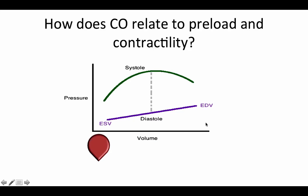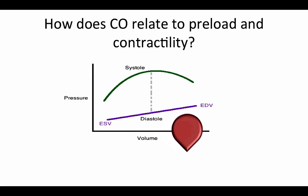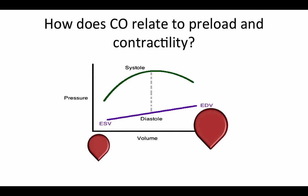The first thing you want to understand is how preload and contractility relate to cardiac output. Here we have a graph comparing what happens during diastole, which is this line shown in purple, versus systole, which is this line shown in green. During diastole, the more you fill the heart, the higher your pressure. So it's like blowing up a balloon — the more air you blow into it, the larger the volume and the higher the pressure.